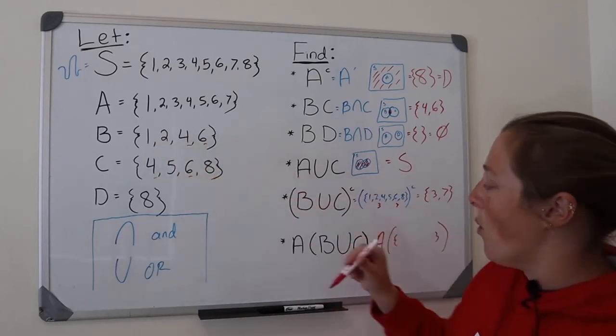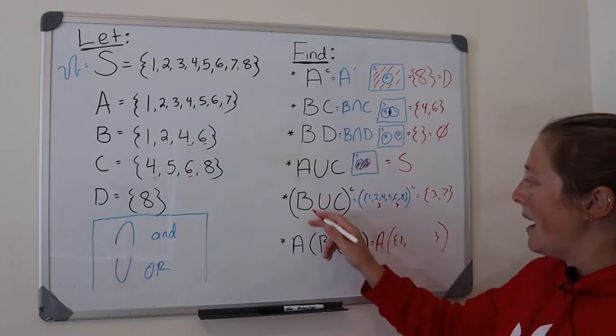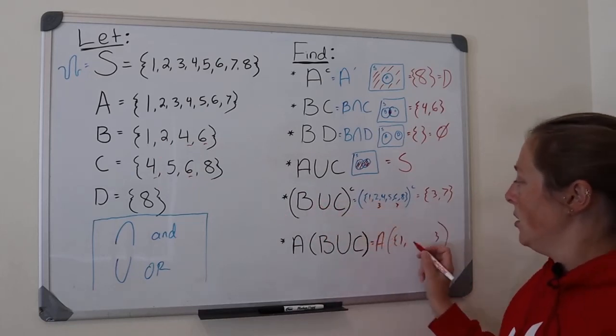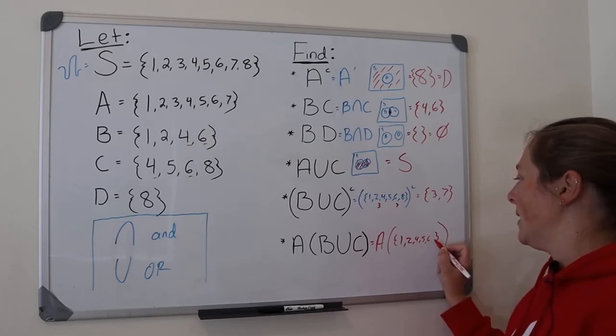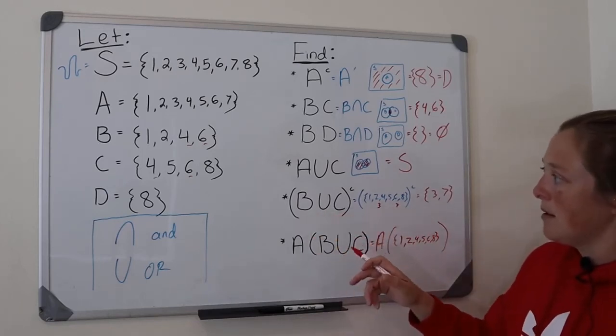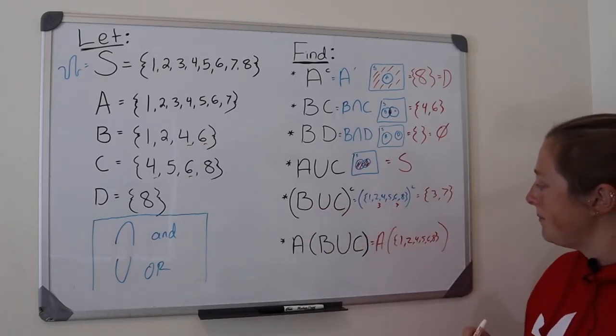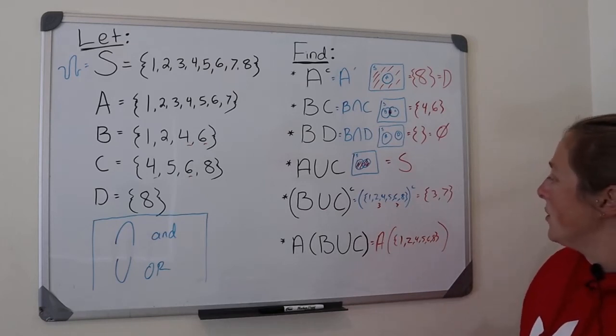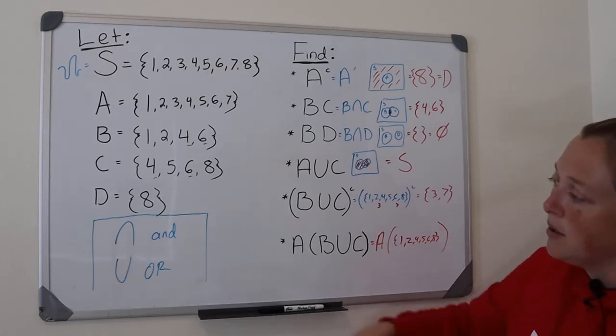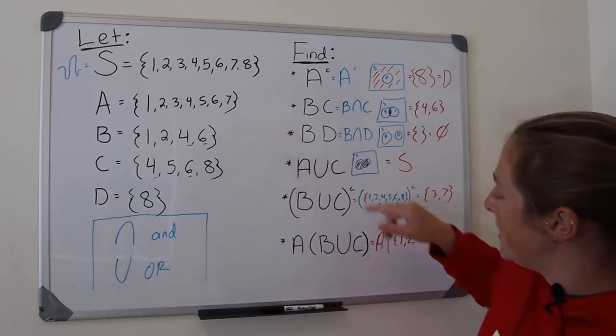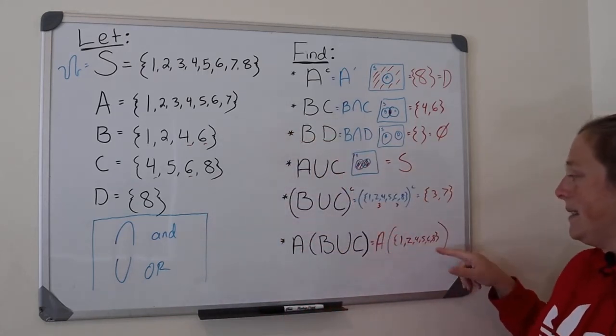So I have one. Actually, I already did it right here. So I had one, two, four, five, six, and eight. I did it right here. So now A union that. So union is and. So what's in A and this guy?